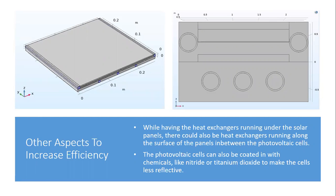Some other ways to increase efficiency would be to put heat exchangers running alongside or between the photovoltaic cells themselves. The photovoltaic cells can also be coated with chemicals like nitride or titanium dioxide to make the cells less reflective, therefore absorbing more energy from the sun.